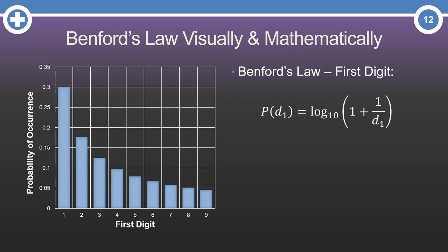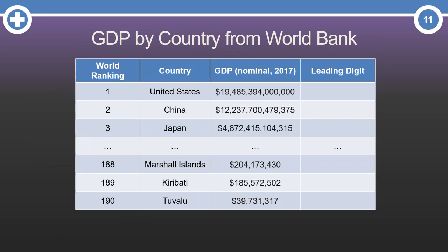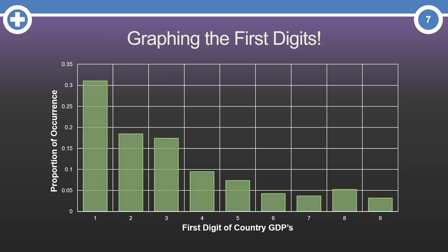Maybe this concept of first digit is hard to grasp. Let me show you an example with some real data. Here, I have gathered the GDP by country from the World Bank, in nominal terms based on 2017. The United States is at the top, followed by China, Japan, and so on until we get to the bottom of the list of 190 countries. The leading digit is literally just the first digit, so for the United States GDP it would be 1. China would also have a 1, Japan a 4, and it continues as we get all the first digits. If we were to graph these first digits on a histogram, what would we get? Would we get a uniform distribution? Nope!